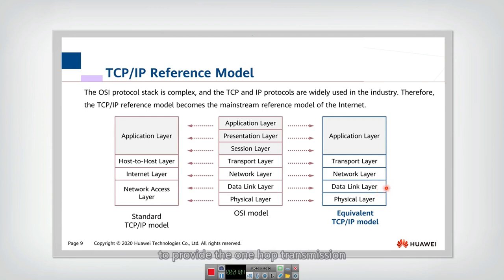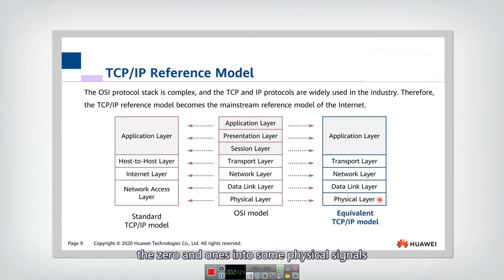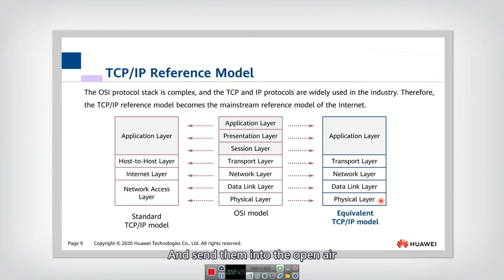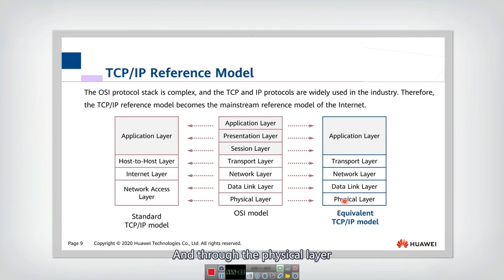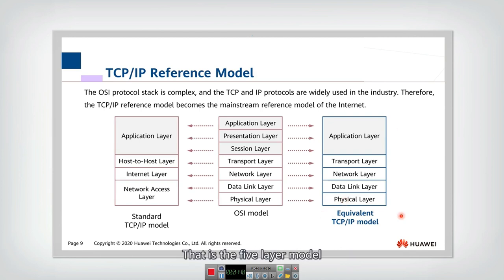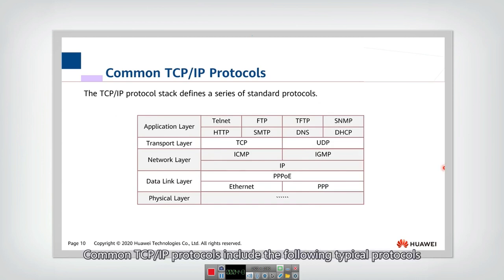Below the network layer is the data link layer, which provides one-hop transmission. Finally, the physical layer translates zeros and ones into physical signals — for example, electromagnetic signals sent into the open air for wireless transmission. Through the physical layer, one node can transmit data to its neighboring node. That completes the five-layer model.